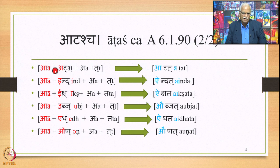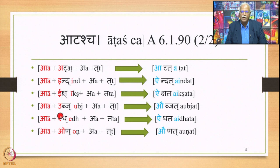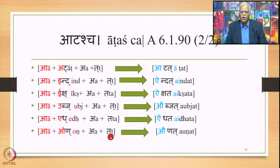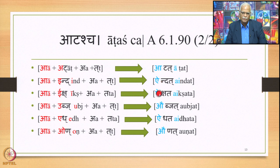In all these cases, where we have different kinds of inputs, Akasavarne Deerghaha, Adgunaha, Vriddhirechi, Atyadhatyutsu etc. would otherwise apply. However, because this A belongs to the augment Aat — stated exclusively for vowel-beginning verbal roots when suffixes like Lang, Lung, or Rung Lakar follow — this is a very special domain. Therefore the sutra Atascha applies, cancels all such other rules, and the output generated is Vriddhi. Atascha is a very, very important rule.